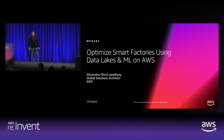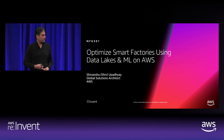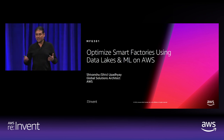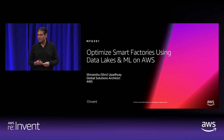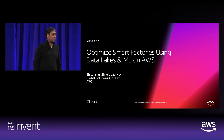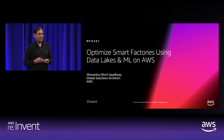Hello, everyone. Thank you for coming. My name is Shiv. I'm part of a global accounts team at AWS. I'm a solutions architect. Global accounts basically means we work with MNCs who have operations spread all over the world, and we work on very cool initiatives with our customers. Today I'm going to talk about my experience working with my customer building data lakes and machine learning to turn their factories into smart factories.